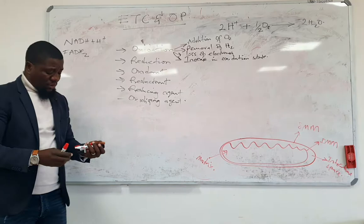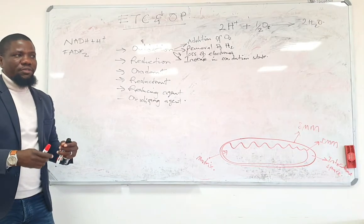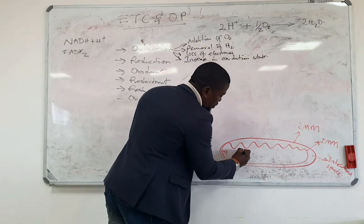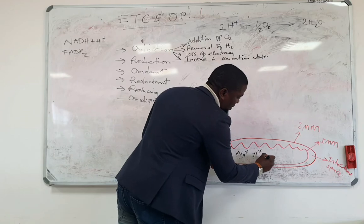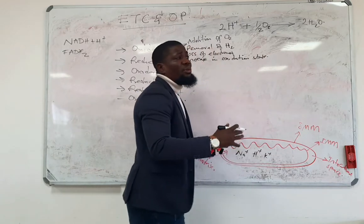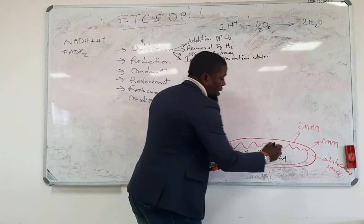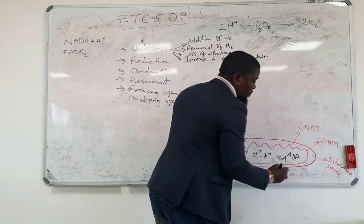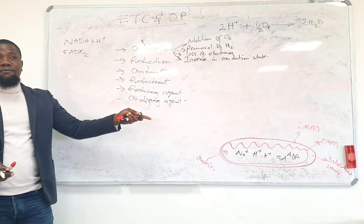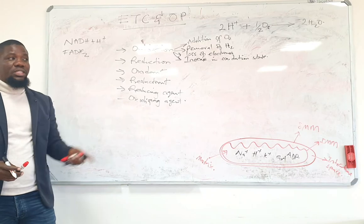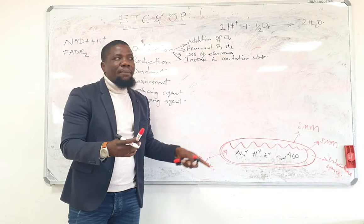Briefly, the mitochondrial matrix is going to be rich in a lot of things. Some of the things that are going to be there include protons such as sodium, hydrogen, and potassium. There will be enzymes, coenzyme A, and ADP. There will be many enzymes, especially those involved in fatty acid oxidation — beta oxidation — which are actually in the mitochondrial matrix. It also contains other proteins.